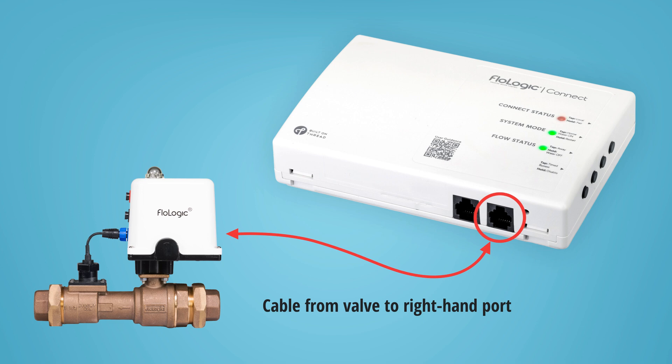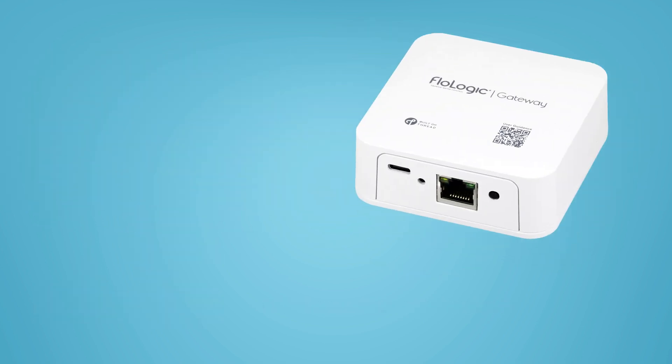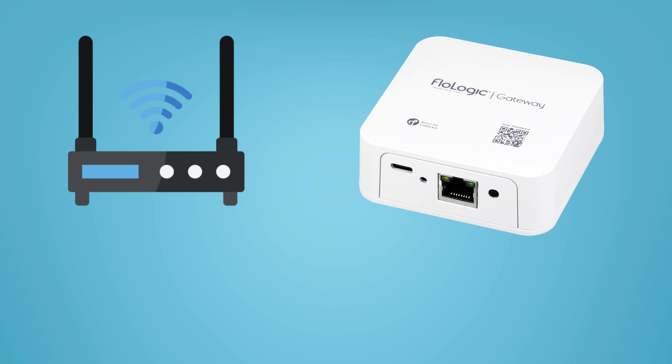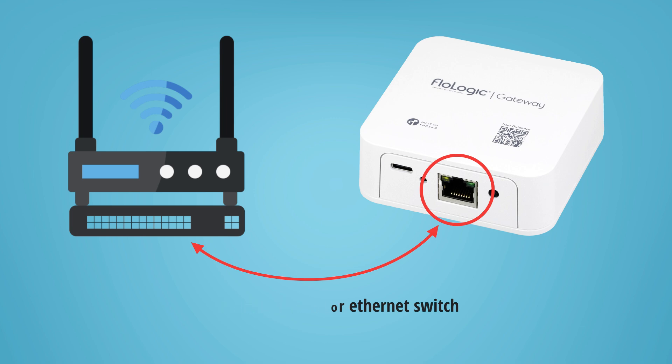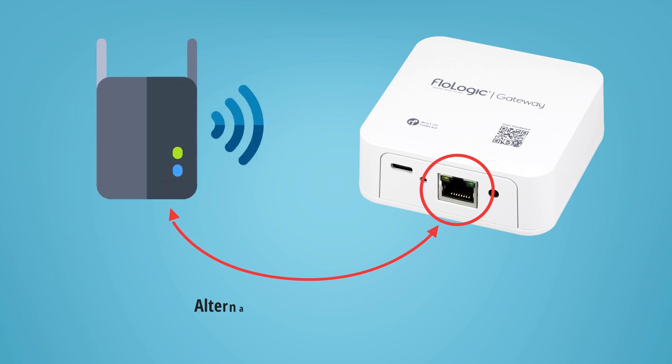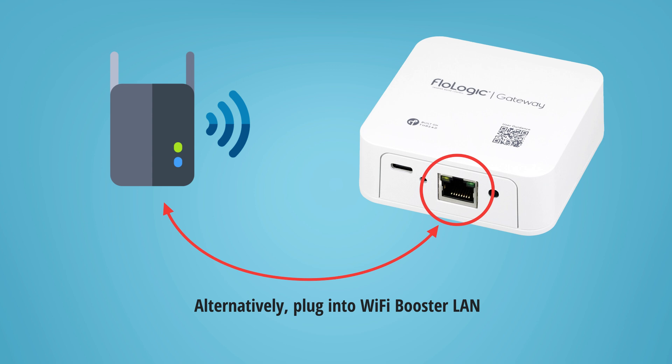Next, plug the gateway module into your router using the ethernet cable. If your router lacks an open port, adding an ethernet switch will provide ports. Plugging the gateway into a Wi-Fi booster's ethernet port is an option that allows locating the gateway closer to the connect module when router distance is a concern.